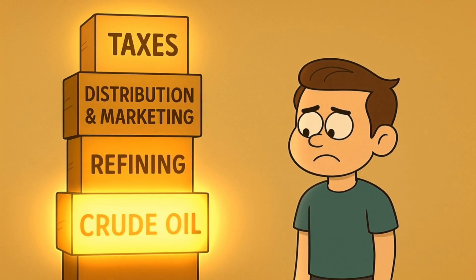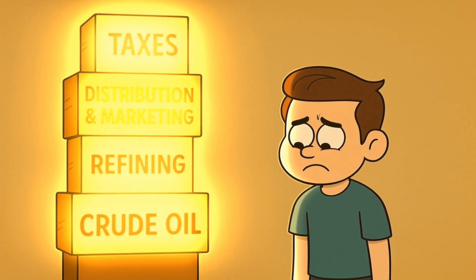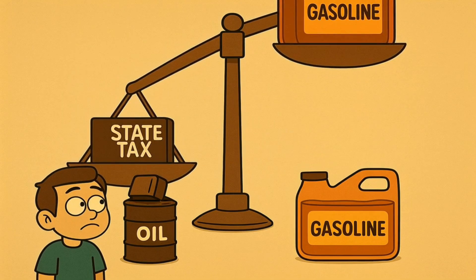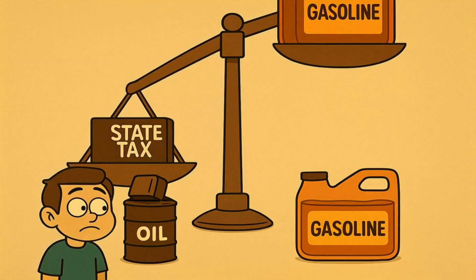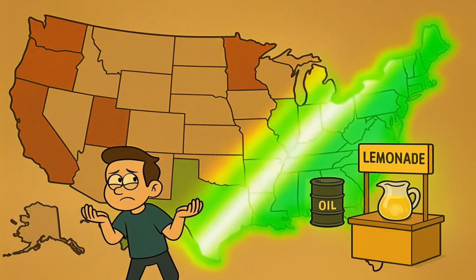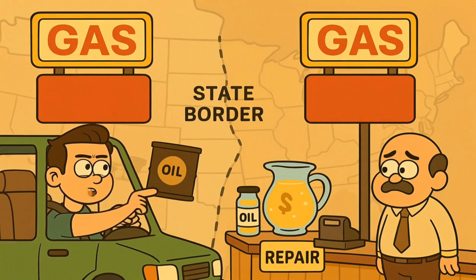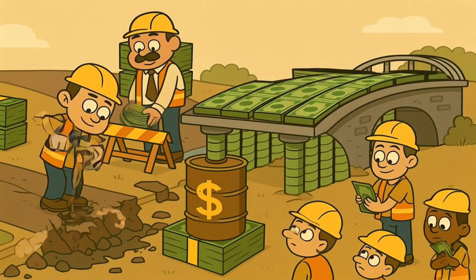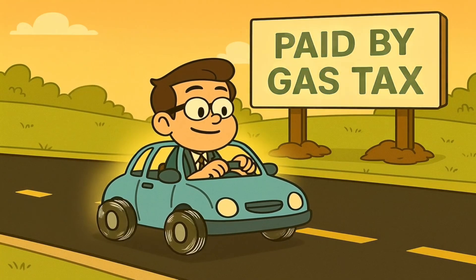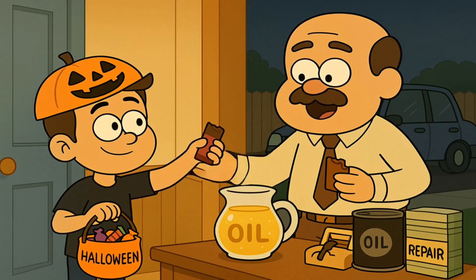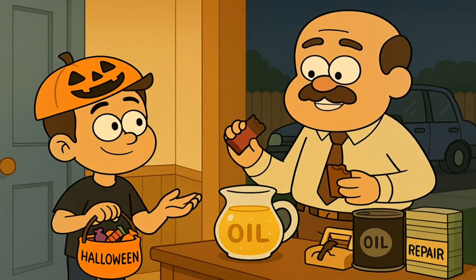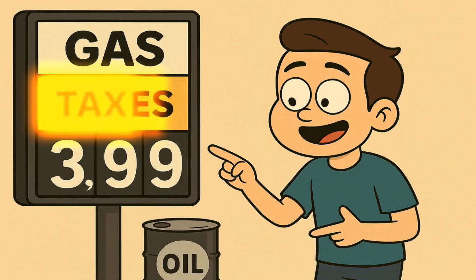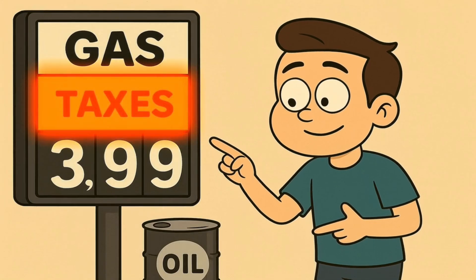They have to pay for the building, the lights, the pumps, and the person working inside who sells you lottery tickets and questionable hot dogs. All of those costs get added into the final price that you pay. If the cost of trucking goes up, then the price of gas goes up a tiny bit as well. The further the gas has to travel from the refinery, the more it might cost. And the fourth and final block is the one that nobody likes to talk about: taxes. Every single time you buy a gallon of gas, a chunk of that money goes straight to the government. There's a federal tax on every gallon, and then each state adds its own tax on top of that. Some states have really high gas taxes, and some have lower ones. And this is why gas can be way more expensive in one state compared to the one right next door.